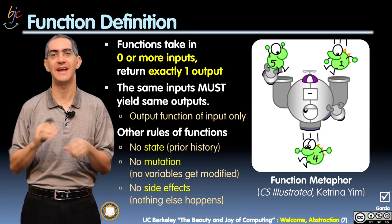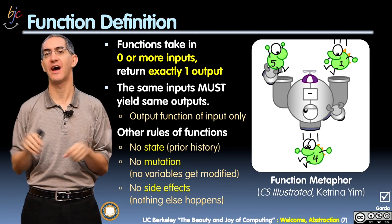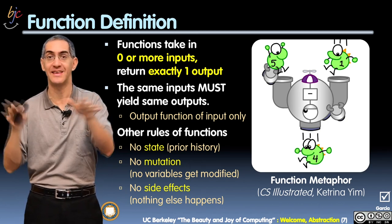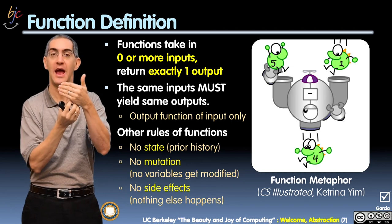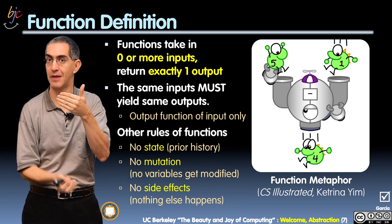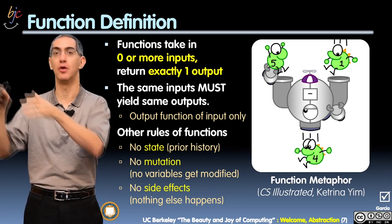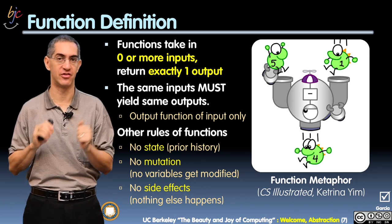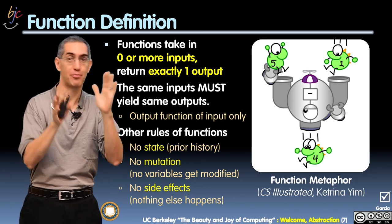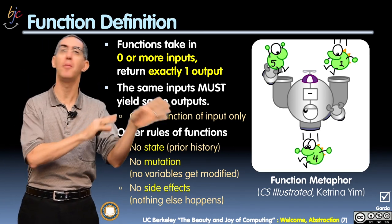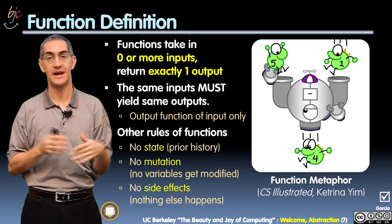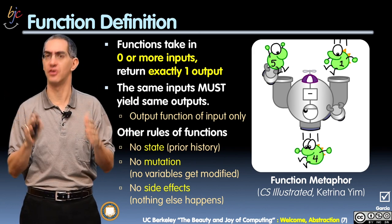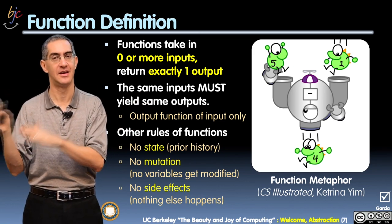The third piece is that it has no side effects. What that means is it can't do anything else — it's going to do its job and produce a single output. It's not going to make the screen or the stage change by making a sprite move around. It's not going to make a robot move around. It's also not going to play a sound or send something to the printer. It can have no other side effects.